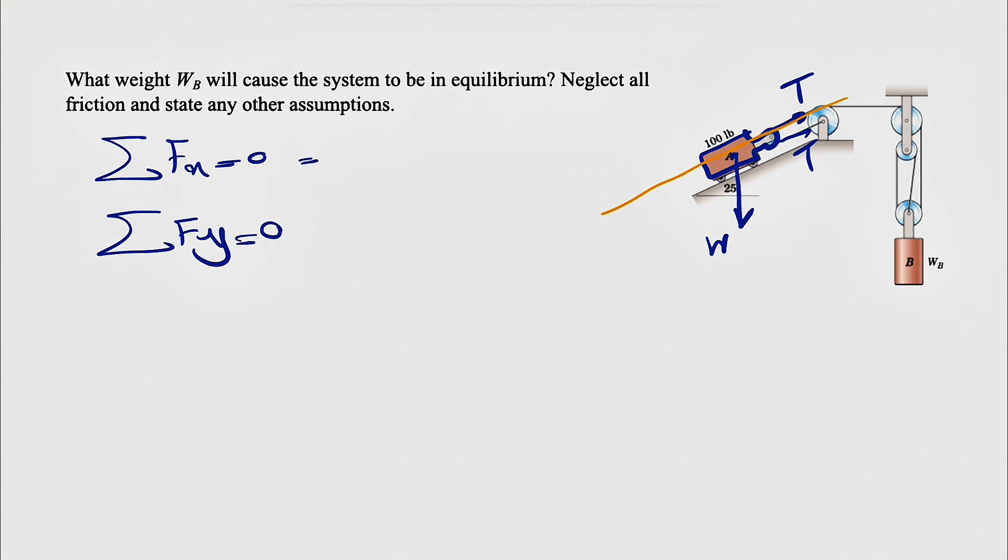So I'm just going to show our X and Y for the first block. Let's call this X and this will be our Y axis. So in X axis we're going to have the two tension in the cable and we're going to have the X component of the W which is what we have in here. We know this angle is also 25 degrees since this angle is 25.